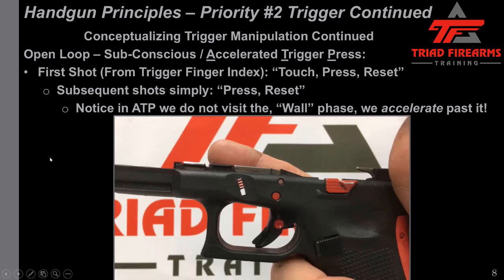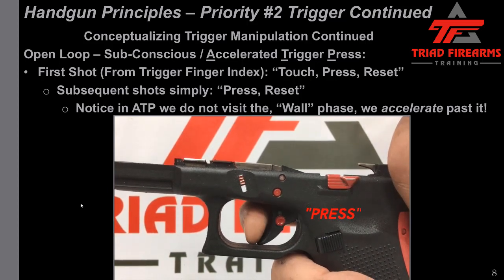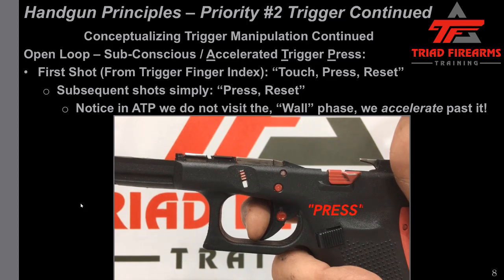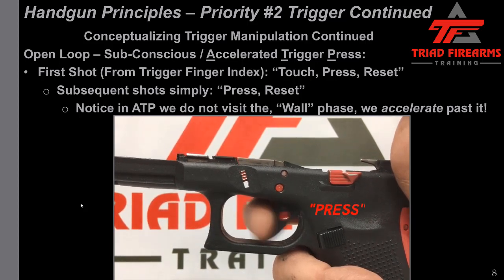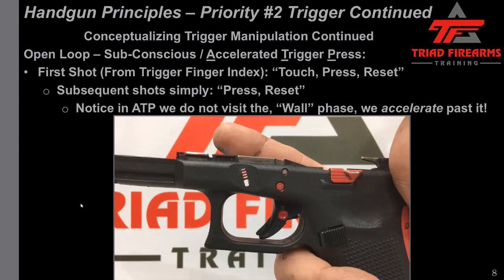Here is an example of the open loop subconscious accelerated trigger press. From the first shot — from trigger finger index — I touch the trigger, then press, then reset. Subsequent shots are just press, reset. Notice in the accelerated trigger press we do not visit the wall phase — we accelerate past it, hence the name accelerated trigger press. I don't care about the wall; I'm accelerating past it. All I'm doing is getting the trigger far enough out to some location beyond the wall so I turn the gun back on.